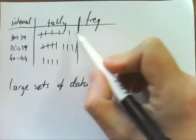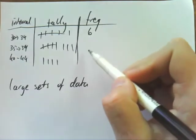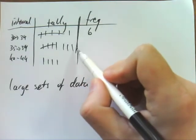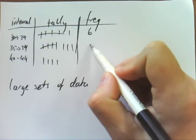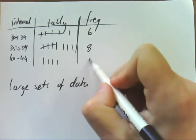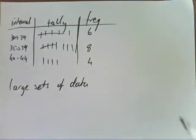And then at the end, you just tally it up, so you work out the frequency. So there are six values between 30 and 34. There are eight values between 35 and 39, and there are four values between 40 and 44.